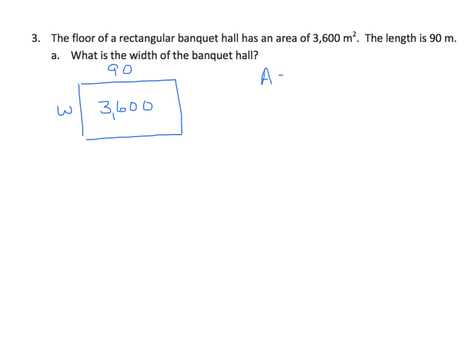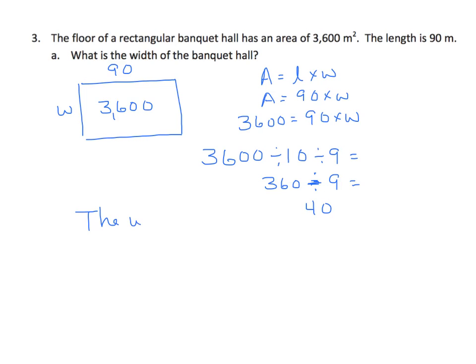We do know that area equals length times width. So we, again, know that the area equals 90 times the width. When we have a missing factor, we have a division problem. So we know that the area equals 90 times something. Let's do some division. So I'm going to have 3,600 divided by 10, divided by 9. 3,600 divided by 10 is 360. Let me put my division sign in and the 9. And 360 divided by 9 is 40. So the width of the banquet hall is 40 meters.